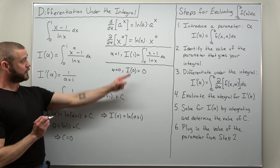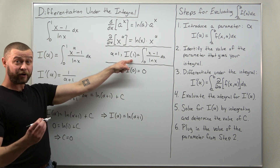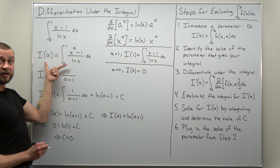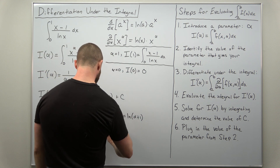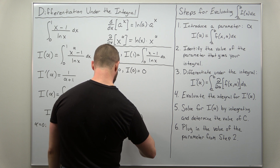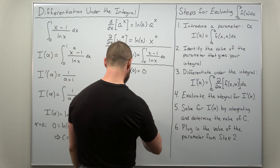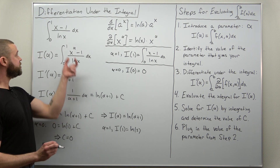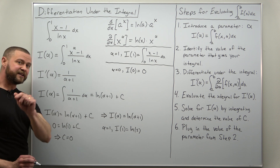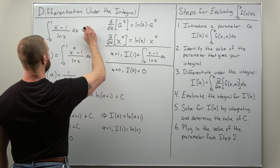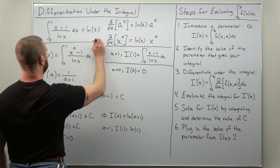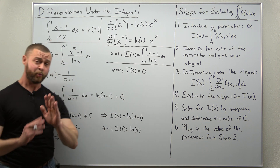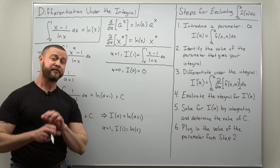The last step: our original integral corresponds to alpha equals 1. Plugging alpha equals 1 into I(α) = ln(α+1) gives ln(1+1) = ln(2). That is the value of our integral. Differentiation under the integral yields the answer, and I don't know of any other straightforward method to evaluate this integral.